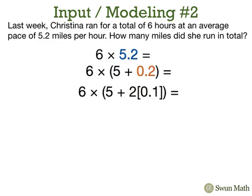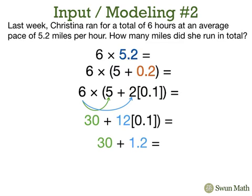Now we'll use the distributive property to multiply 6 times 5 and add it to 6 times 2. Now we have 30 plus 12 times 1 tenth. We'll multiply 12 times 1 tenth, and now we have 30 plus 1.2.